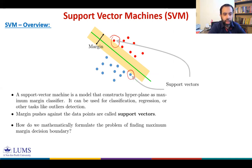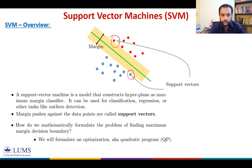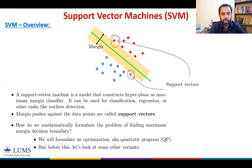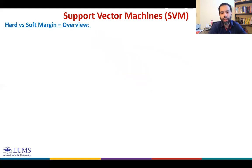How do we mathematically formulate the problem of finding the maximum margin decision boundary? We will formulate this as an optimization problem — specifically what is known as a quadratic program. Before going into that, let's look at some of the variants of SVM. The first variant is what we call hard margin SVM and soft margin SVM.